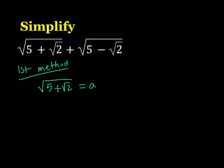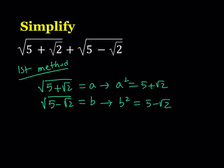And the second radical, we're going to call that b. You can use other variables as well. It doesn't really matter. From here, we do get the following. a squared becomes 5 plus root 2, and b squared becomes 5 minus root 2.